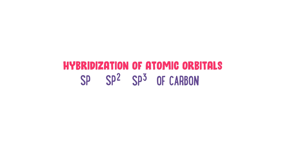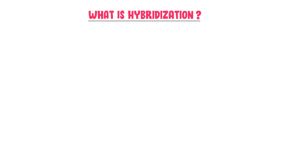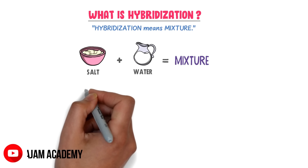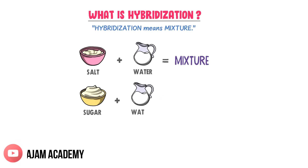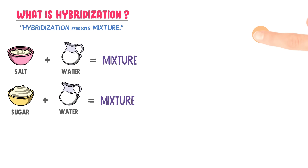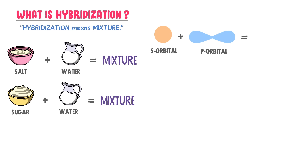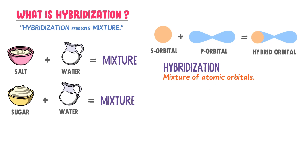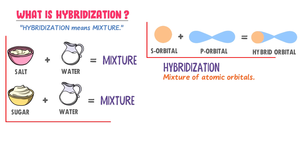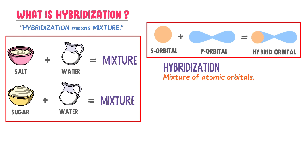Hybridization of atomic orbitals and SP, SP2, SP3 hybridization of carbon. The word hybridization means mixture. For example, when you mix salt plus water, you get a mixture. When you mix sugar plus water, you get a mixture. Similarly, consider two atomic orbitals: S orbital and P orbital. When these two orbitals are combined together, they form hybrid orbitals.